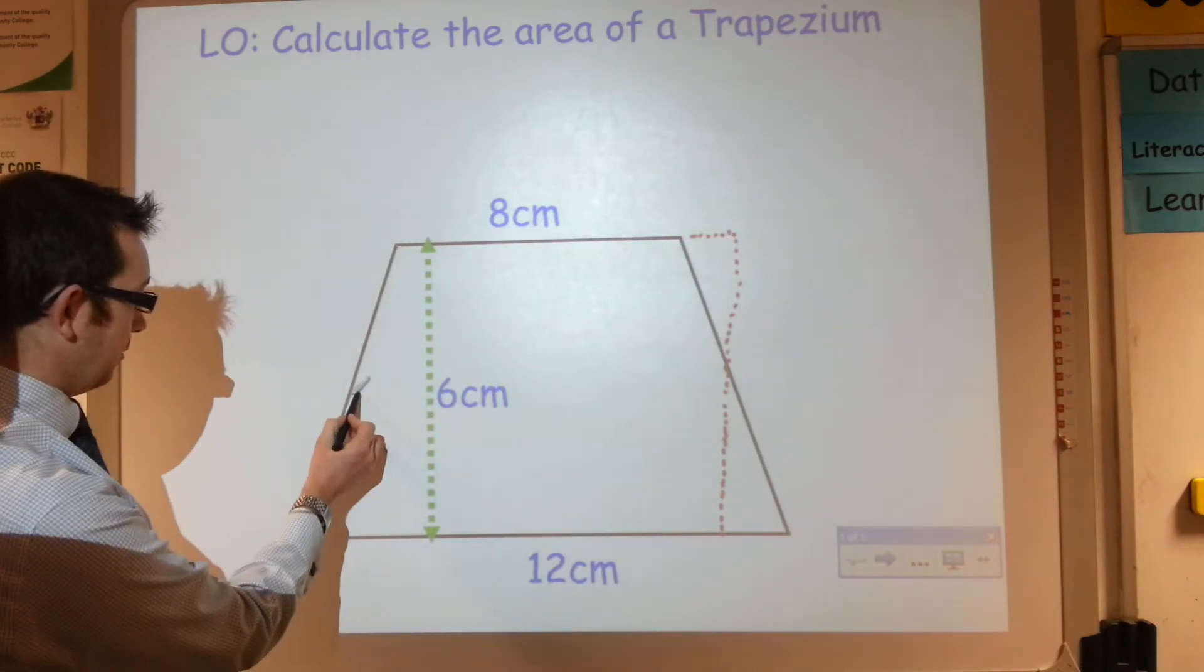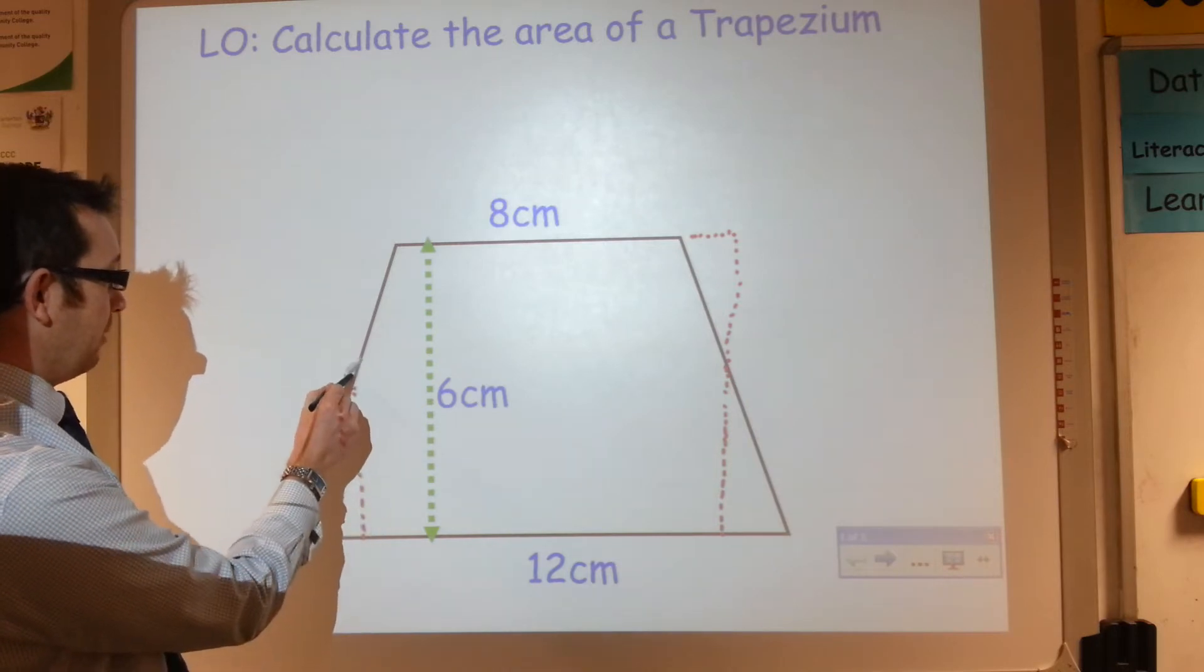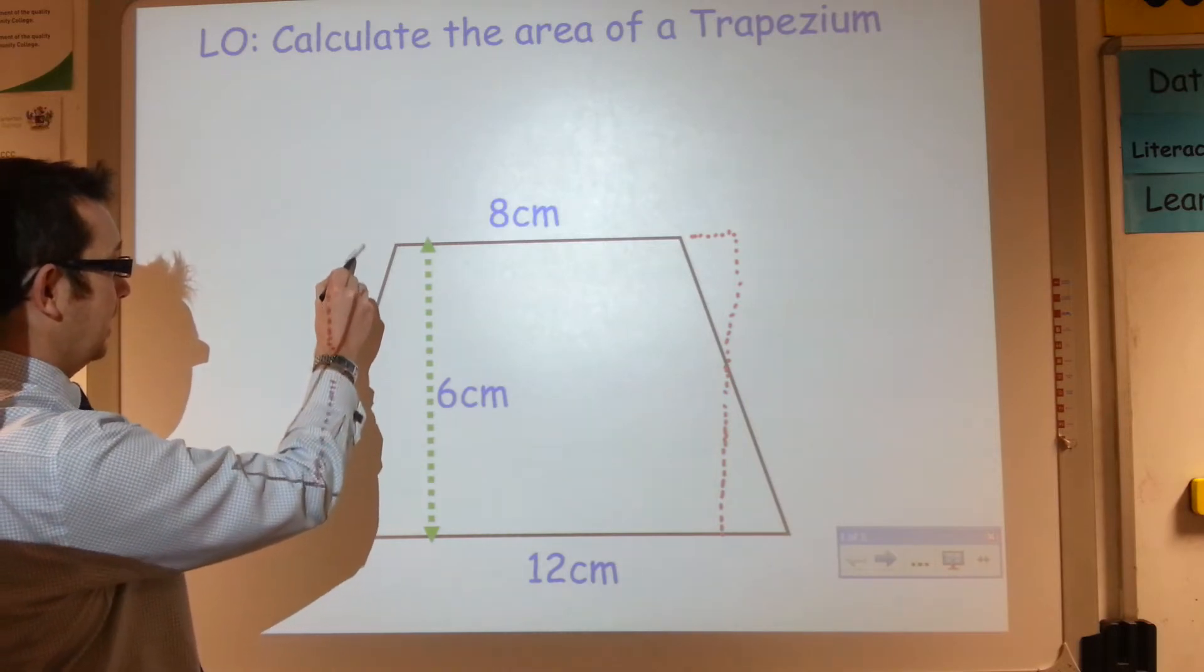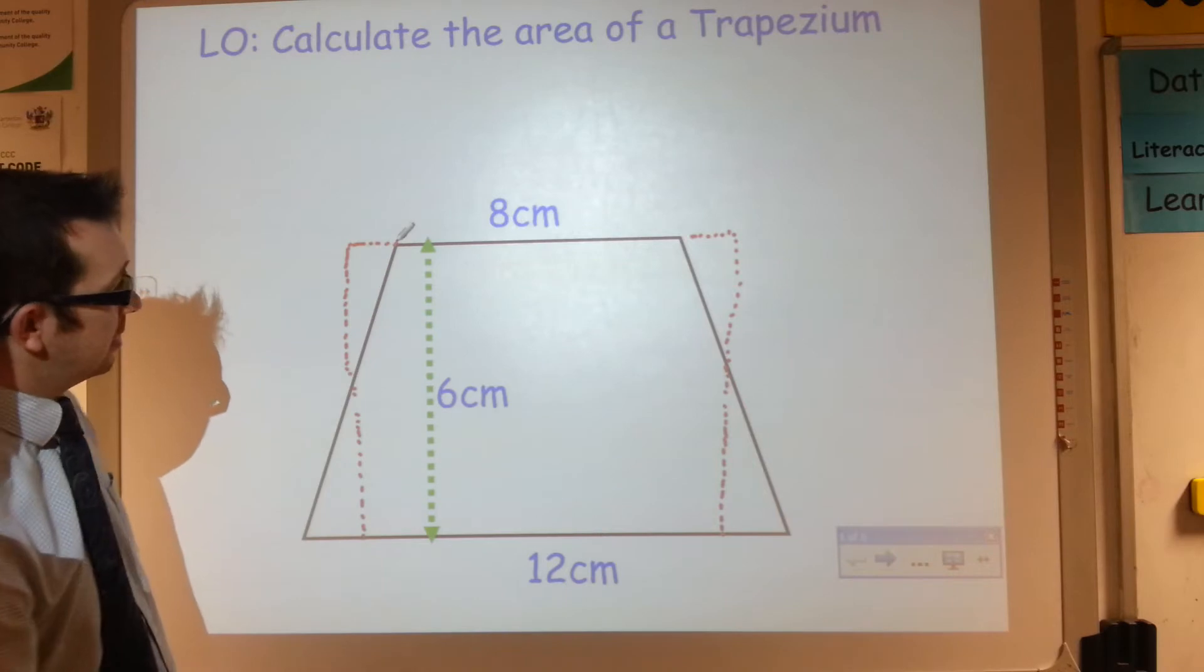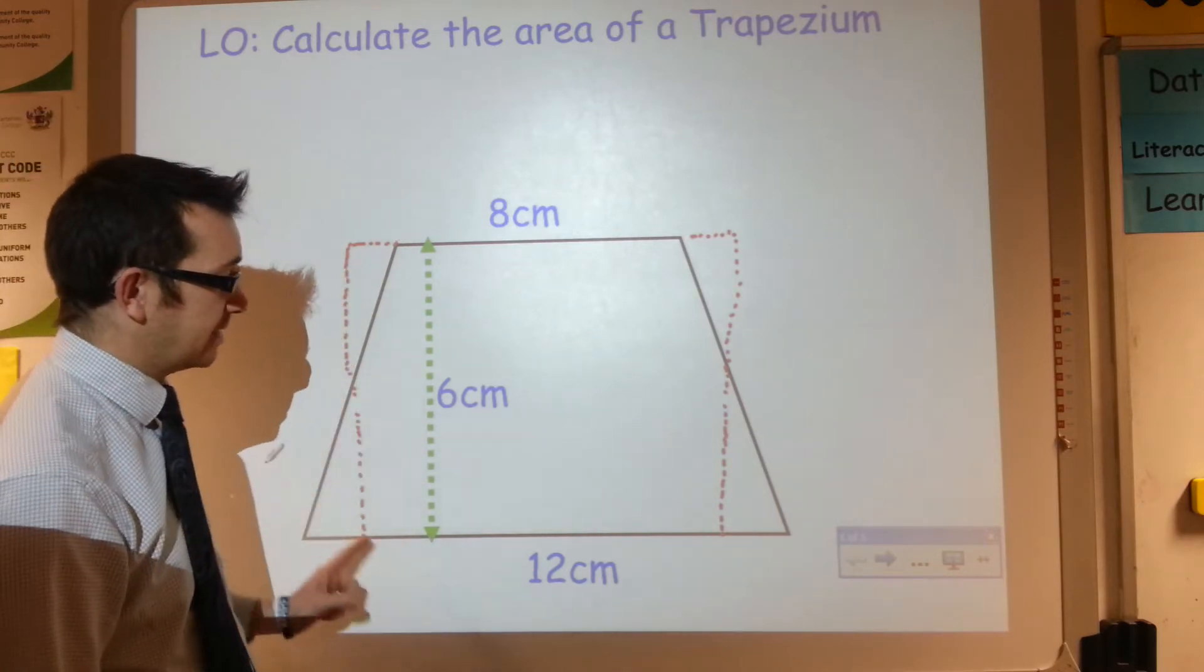If I was to chop off this corner here, I could then flip it round and put it in that space there. So if you look at the red lines there, what you've actually got is a rectangle.